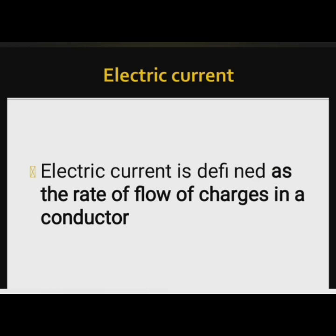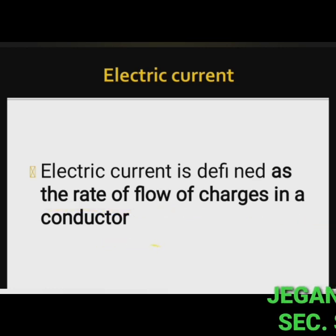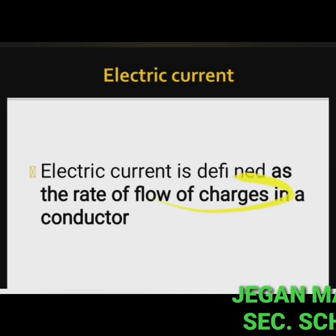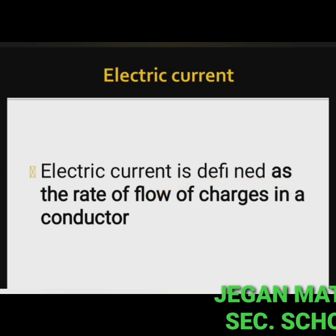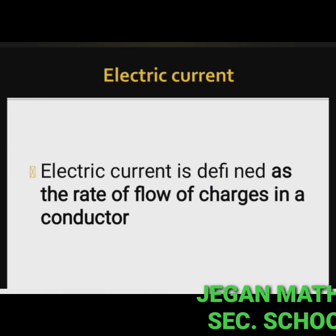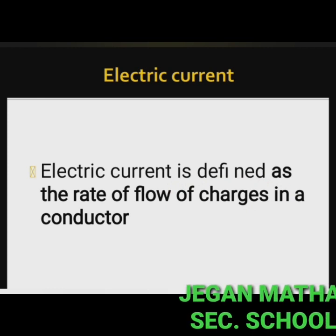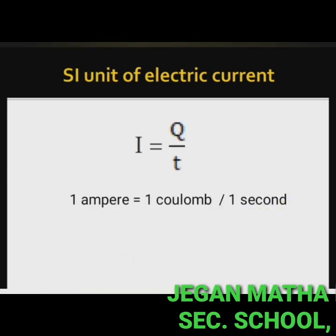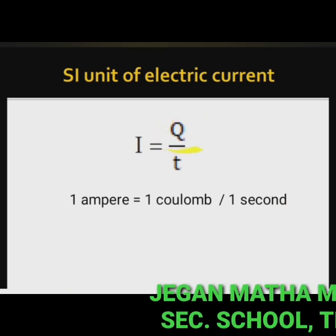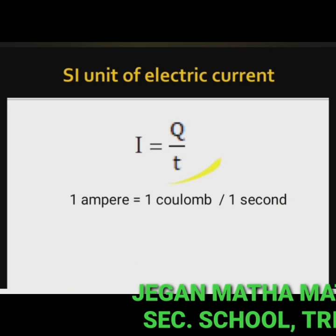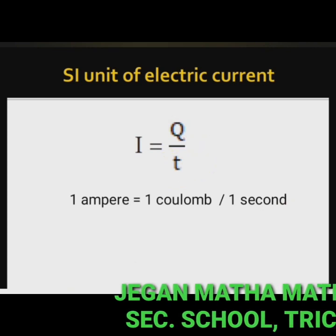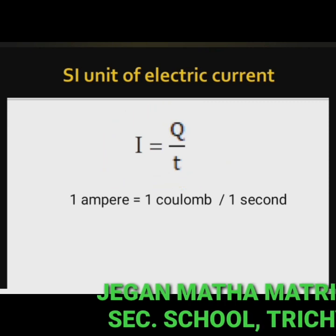Electric current is often termed as current and it is represented by the symbol I. It is defined as the rate of flow of charges in a conductor. This means that the electric current represents the amount of charges flowing in any cross-section of a conductor — for example, a copper wire — in unit time. That is, if a net charge Q passes through any cross-section of a conductor in time T, then the current flowing through the conductor is I = Q / T.